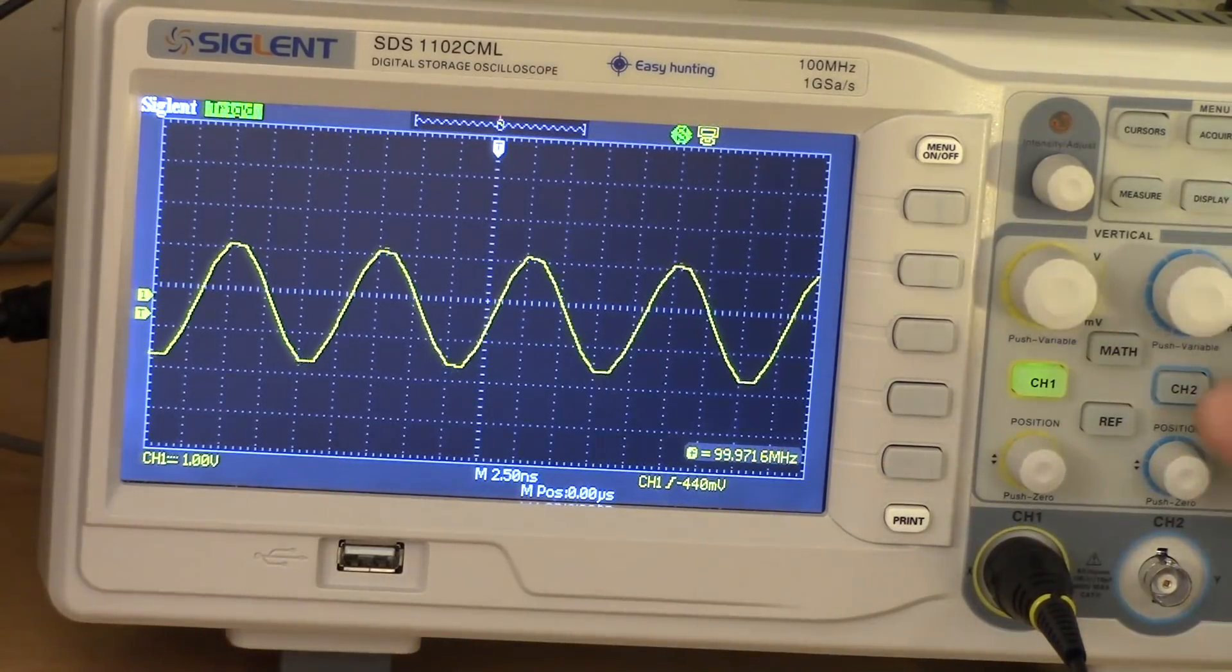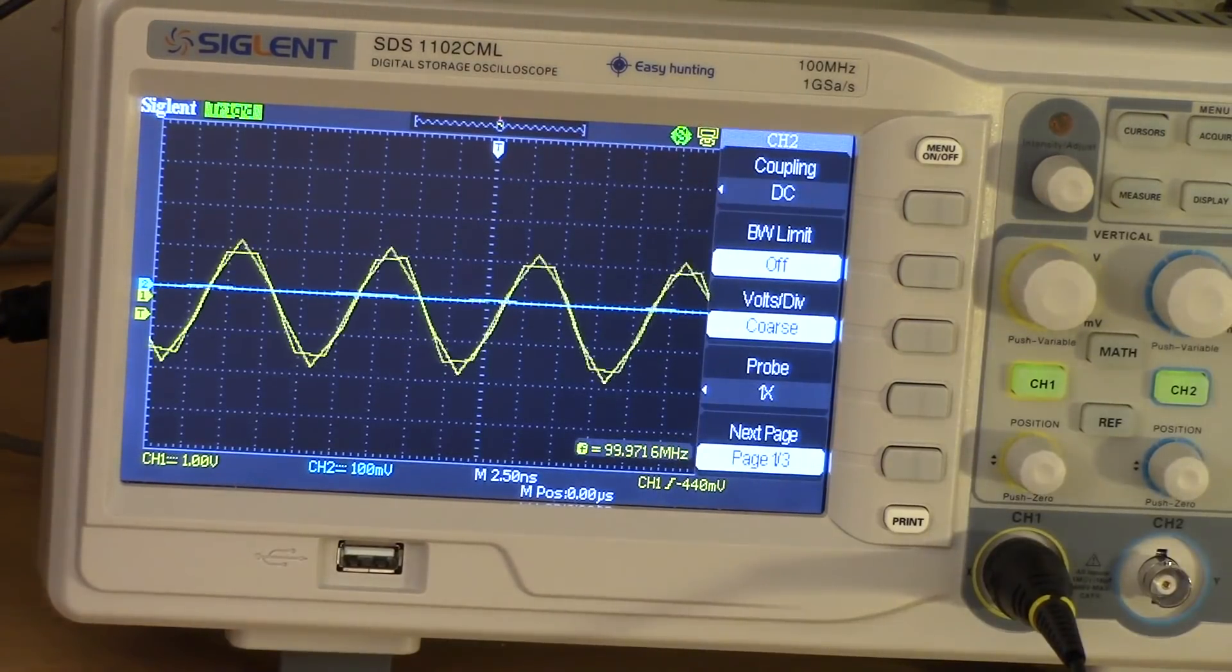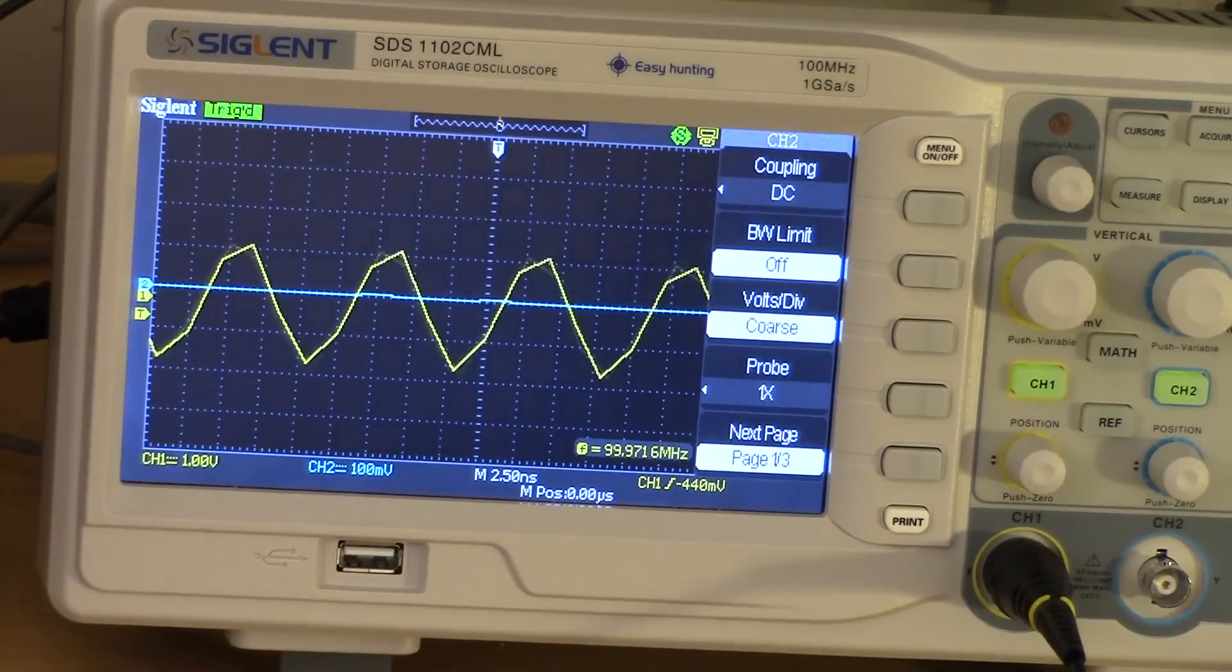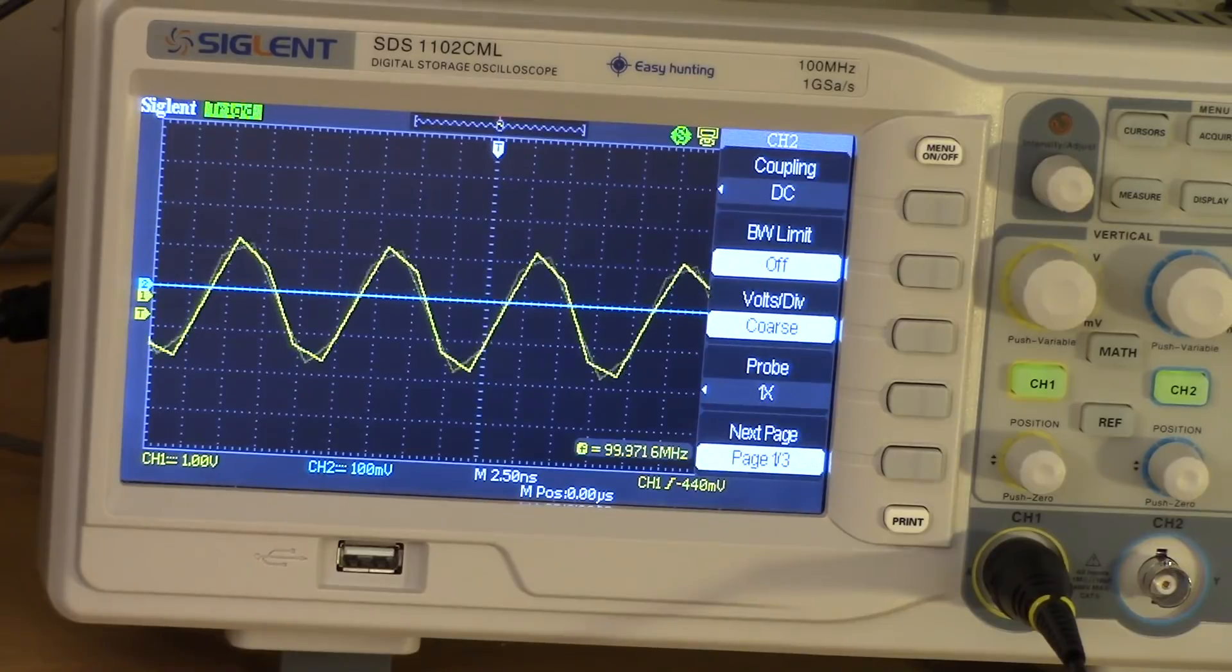And we can see that when I turn on channel two, you notice the shape gets even worse. And that's because with two channels turned on, the sampling rate drops to 500 million samples per second. This is entirely natural. And you'd see this on any scope with the same specifications.